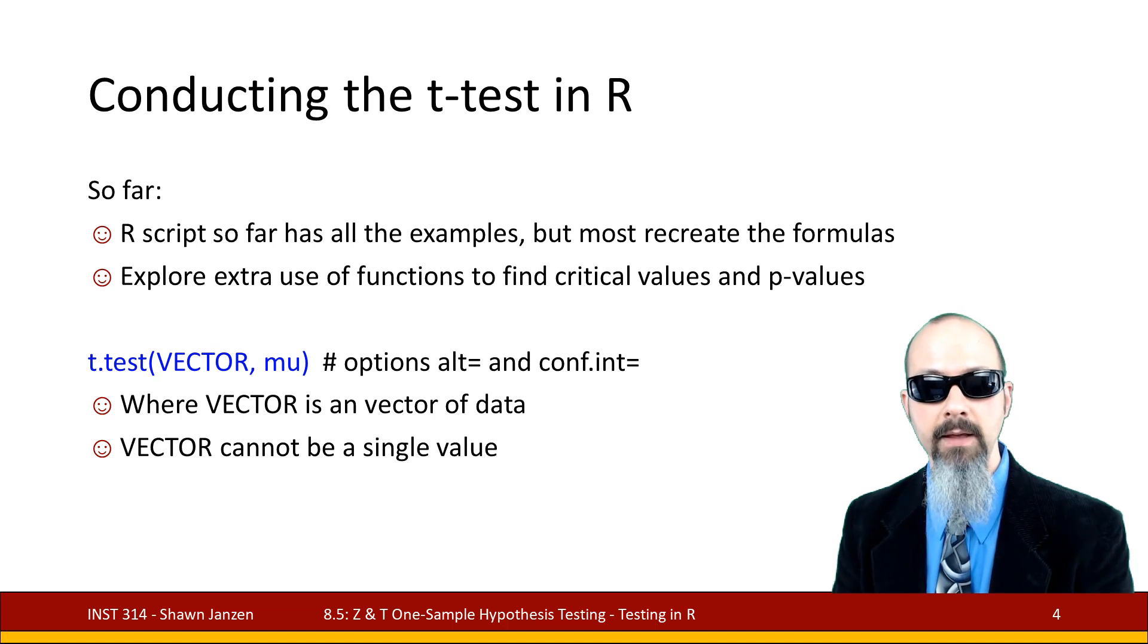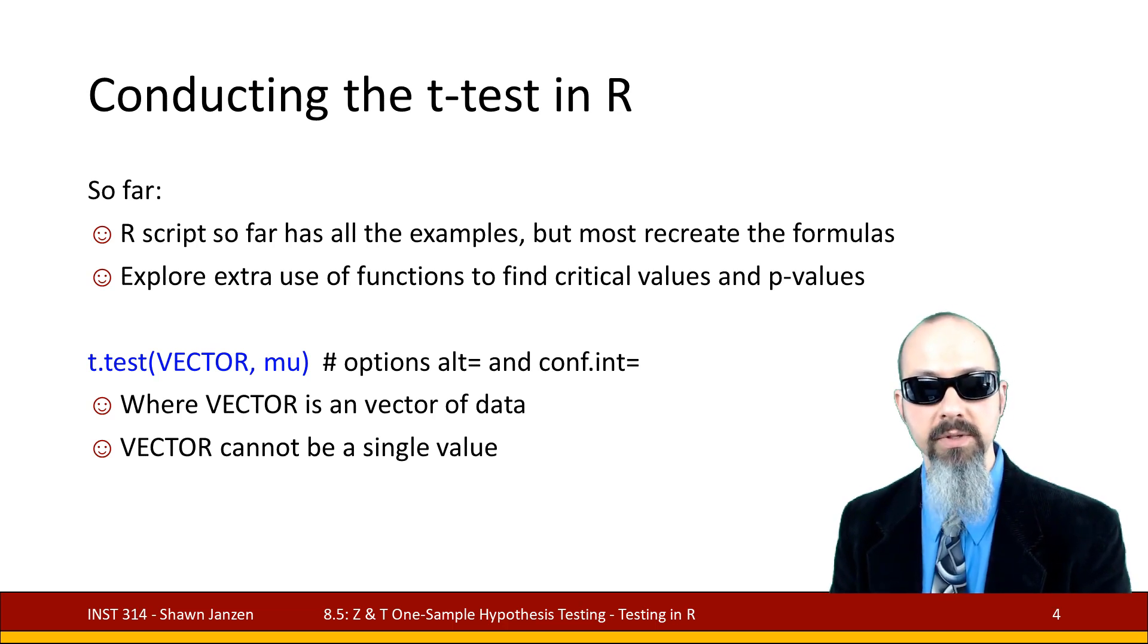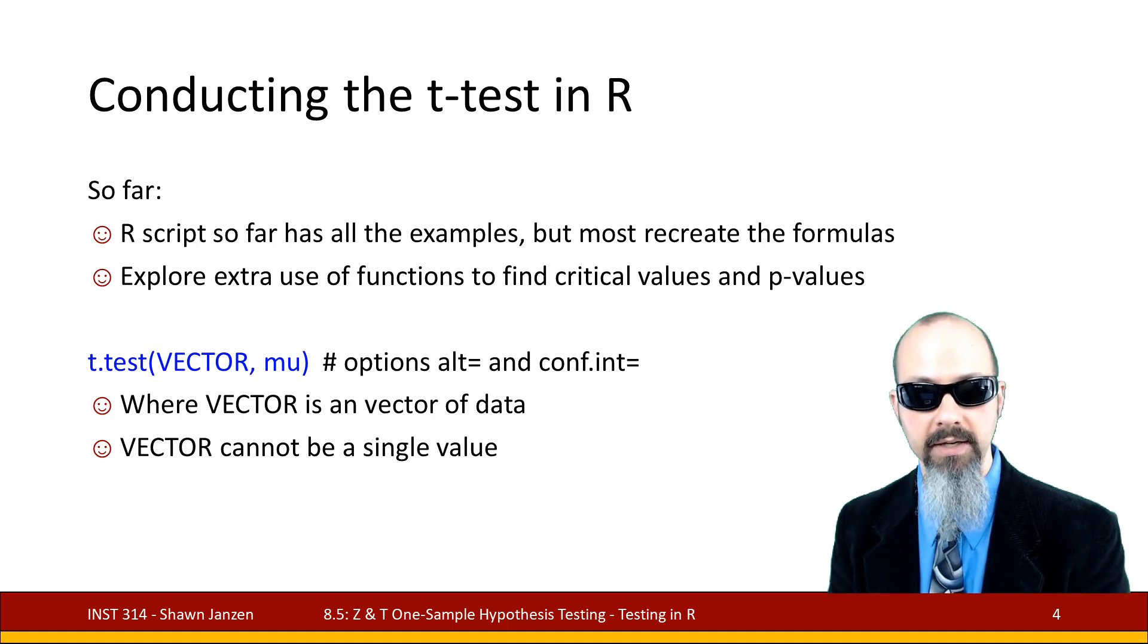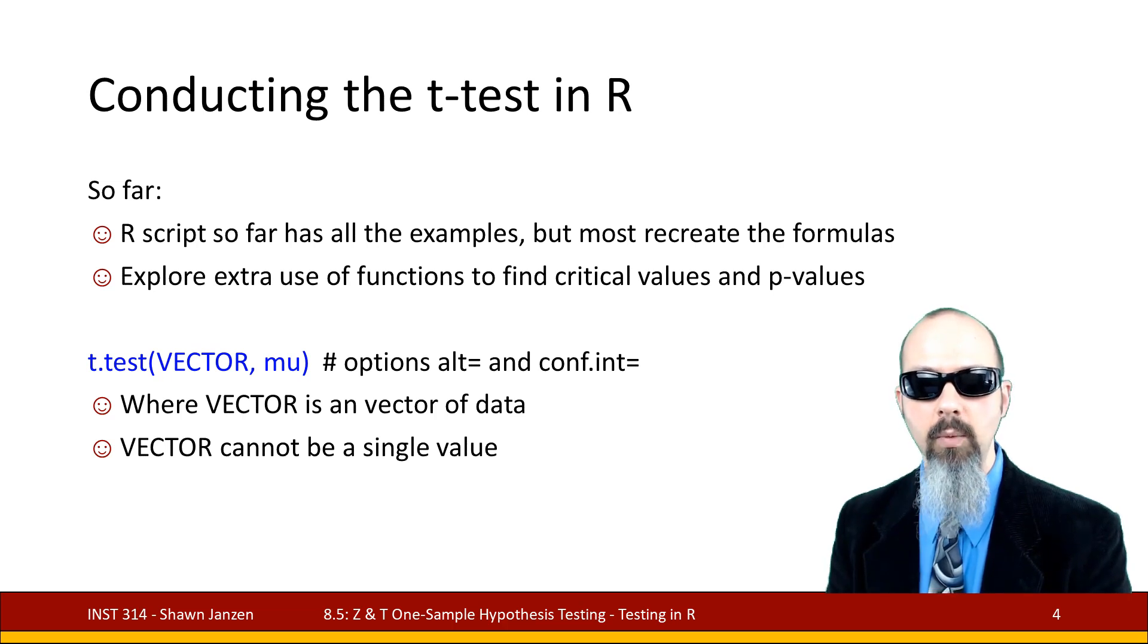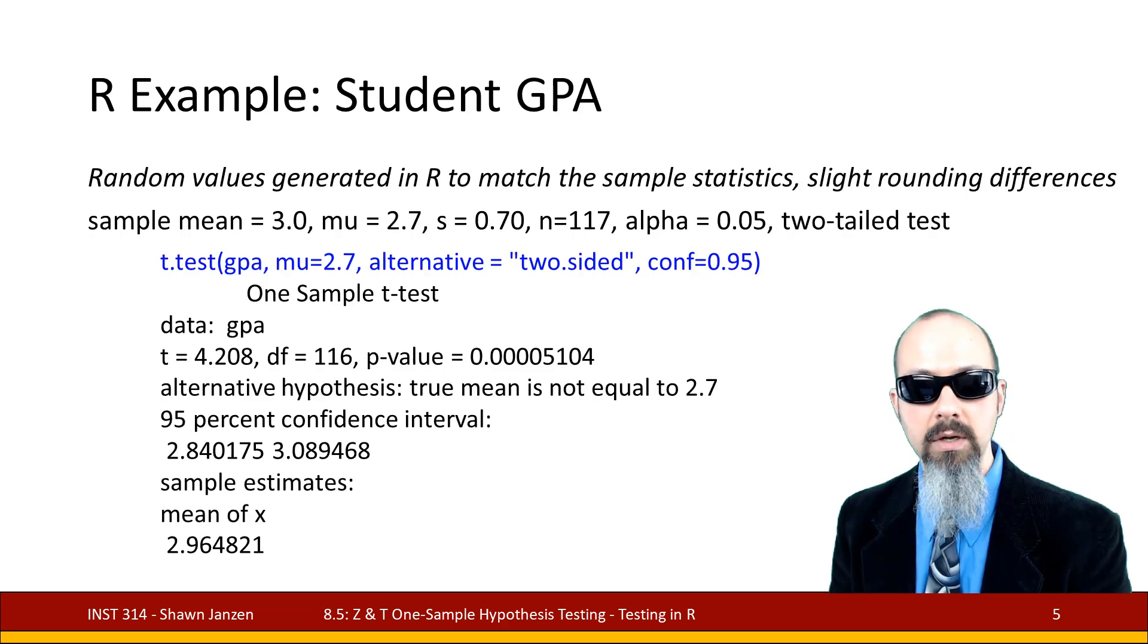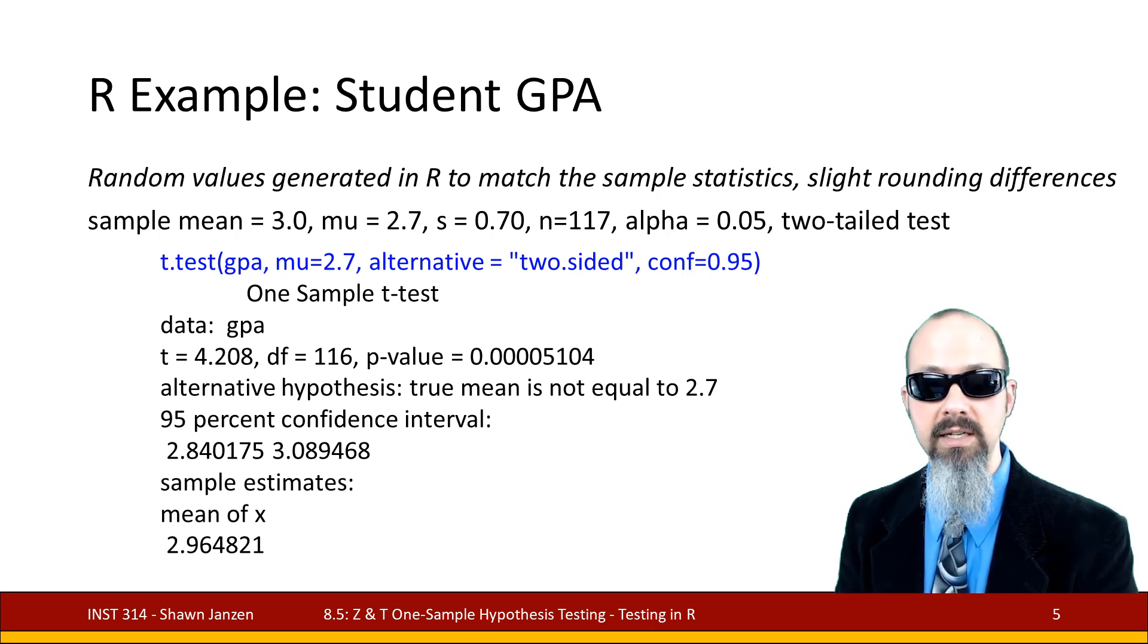When you want to run a t-test in R, the function is t.test with some data vector, the variable of interest, comma, and then mu that you have. We have additional options to help us figure out if we want to do a one-tail upper or lower or if it's two-sided and if we want to specify a confidence interval. The default settings are to do a two-tail test and give you a confidence interval of 95%. What I really want to draw your attention to is where I wrote vector. Vector means it has to be a column of data, it cannot be a single data value. So if we wanted to do the example with the education and I gave you an exact point estimate, you wouldn't be able to use the t-test function for that, but we would be able to recreate it by hand.